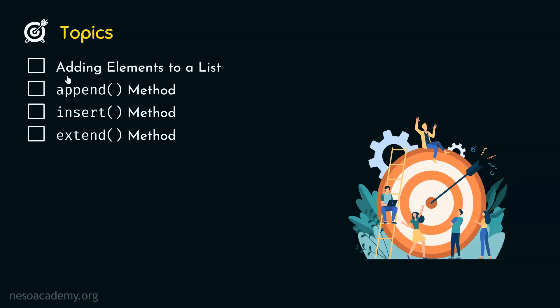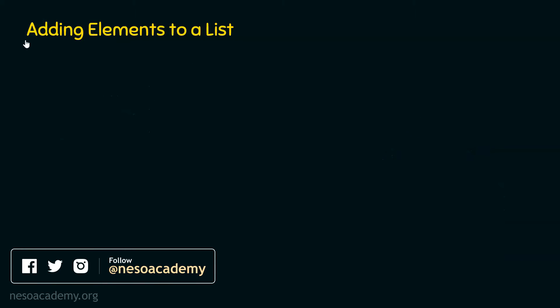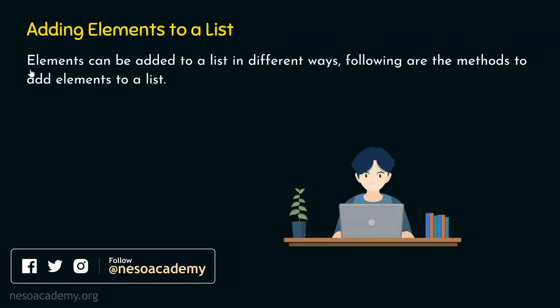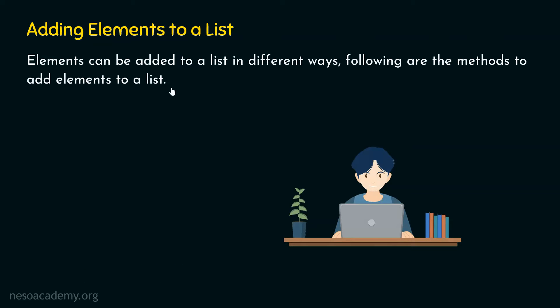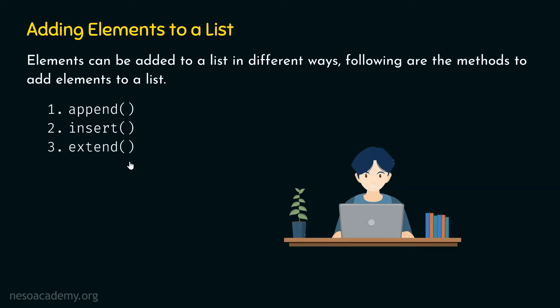Let's start with the first topic: adding elements to a list. Elements can be added to a list in different ways. The methods to add elements are the append method, the insert method, and the extend method. With the help of these methods, we can add elements to a list.